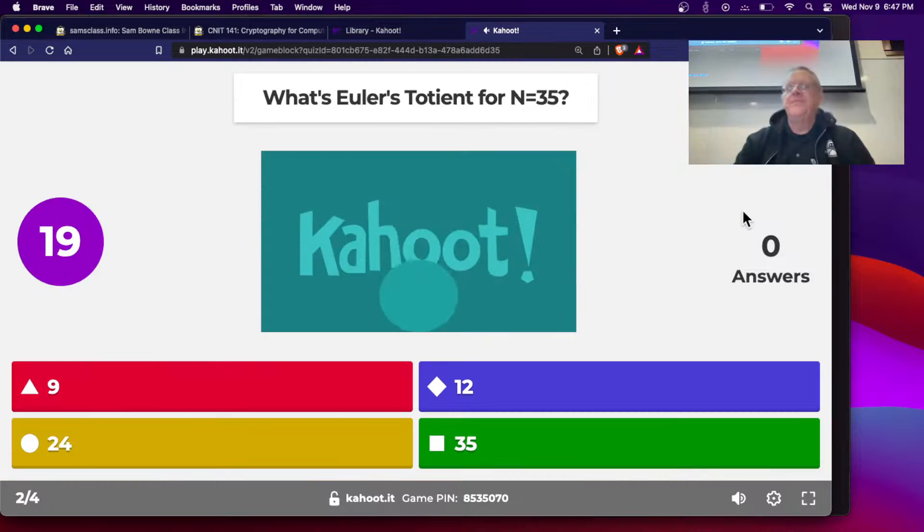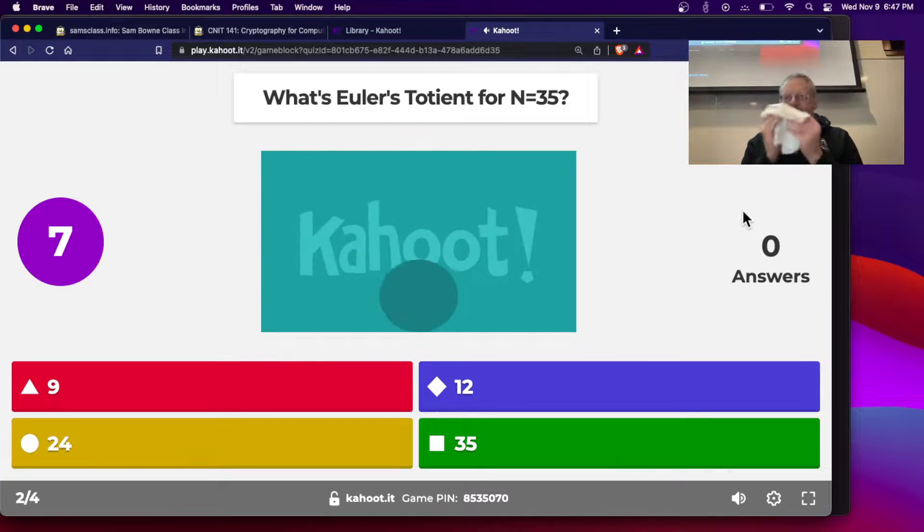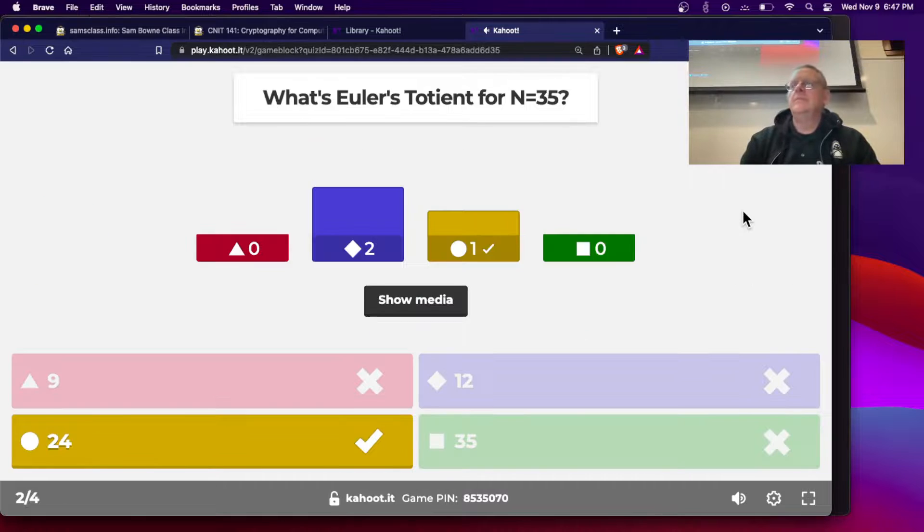All right. What's Euler's totient for 35? All right. So you got one right. It's the same thing. Euler's totient is P minus one times Q minus one. Thirty-five is five times seven, so it's four times six, twenty-four.